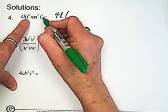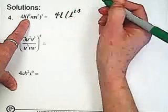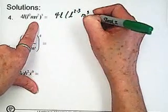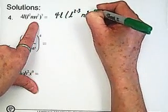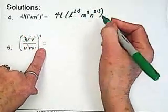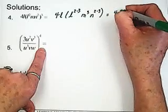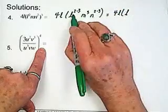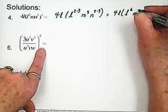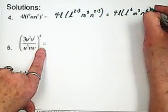l squared cubed, so we have l and then this is 2 times 3. m to the power of 3. And n, the exponent of 2, is multiplied by 3. So this becomes 4l times l. 2 times 3 is 6. We have m cubed and n, 2 times 3 is 6 again.